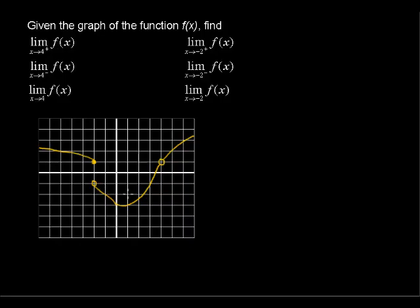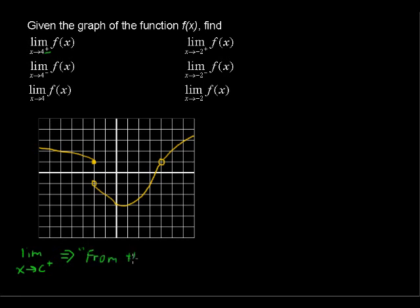Given the graph of the function f, find the limit of f as x approaches 4 from the right. That's what this plus sign means — from the right. The limit as x approaches some value c with a plus sign means from the right. So you're coming in from the right-hand side, which is why these are called one-sided limits.